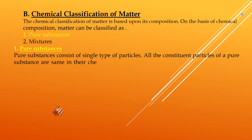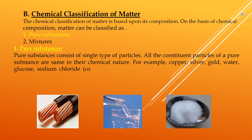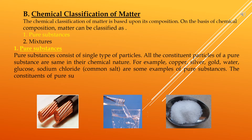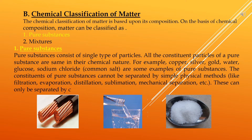Examples of pure substances include copper, silver, gold, water, glucose, and sodium chloride (common salt). These substances are formed from a single type of constituent particle. The constituents of pure substances cannot be separated by simple physical methods like filtration, evaporation, distillation, sublimation, or mechanical separation. They can only be separated by chemical or electrochemical methods.